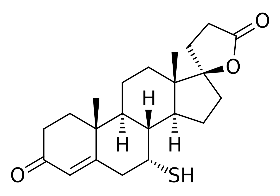7-alpha-thiospironolactone, also known as 7-alpha-TS, developmental code name SC-24813, also known as diacetylspironolactone, is a steroidal anti-mineralocorticoid and antiandrogen of the spirolactone group and a minor active metabolite of spironolactone.